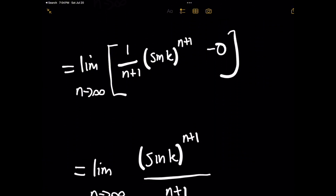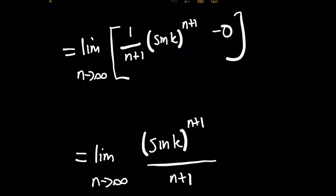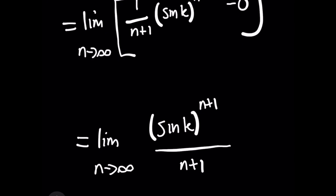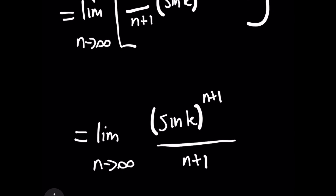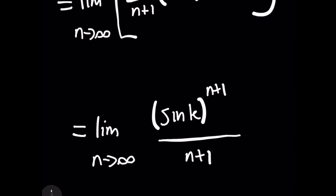When you simplify this further, you get the limit as n approaches infinity of sine of k raised to the n plus 1, all over n plus 1. This is the part where most people get it wrong — you might be wondering, since sine of k oscillates between negative 1 and 1, does this limit not exist?